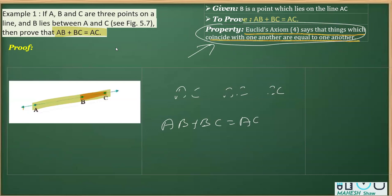You don't have to mention anything else except that what I wrote here is the property that from this Axiom, things which coincide with one another are equal to one another.